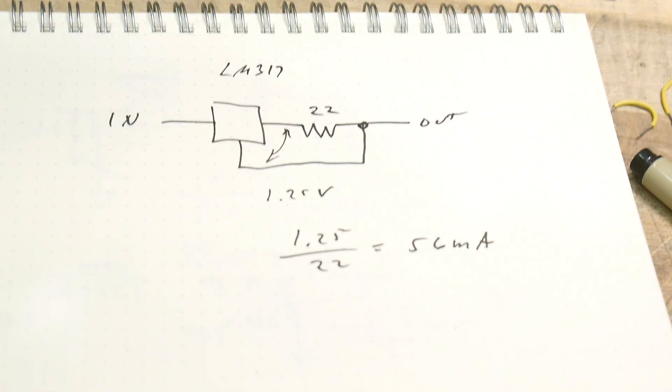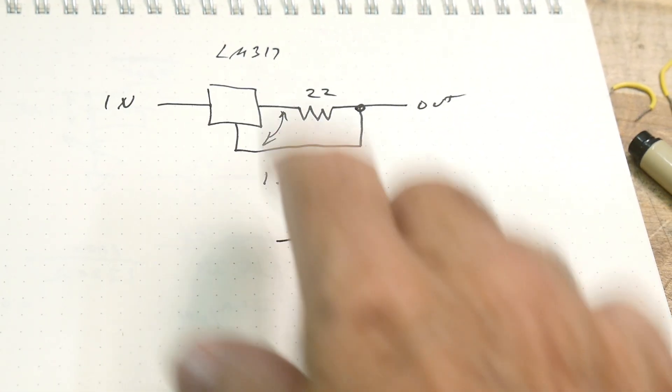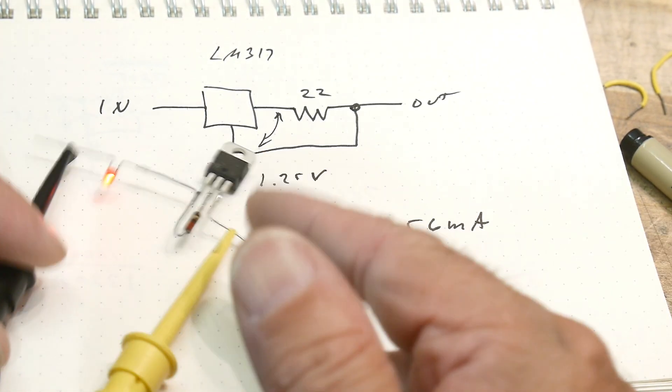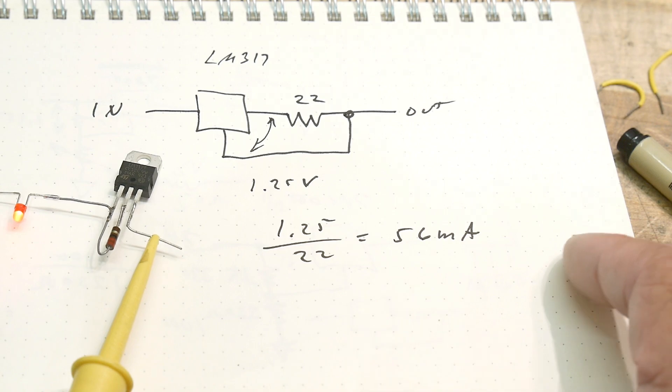We used to use these all the time in LED land. Back in the old days, we needed constant currents to drive LEDs. And we use the circuit all the time.